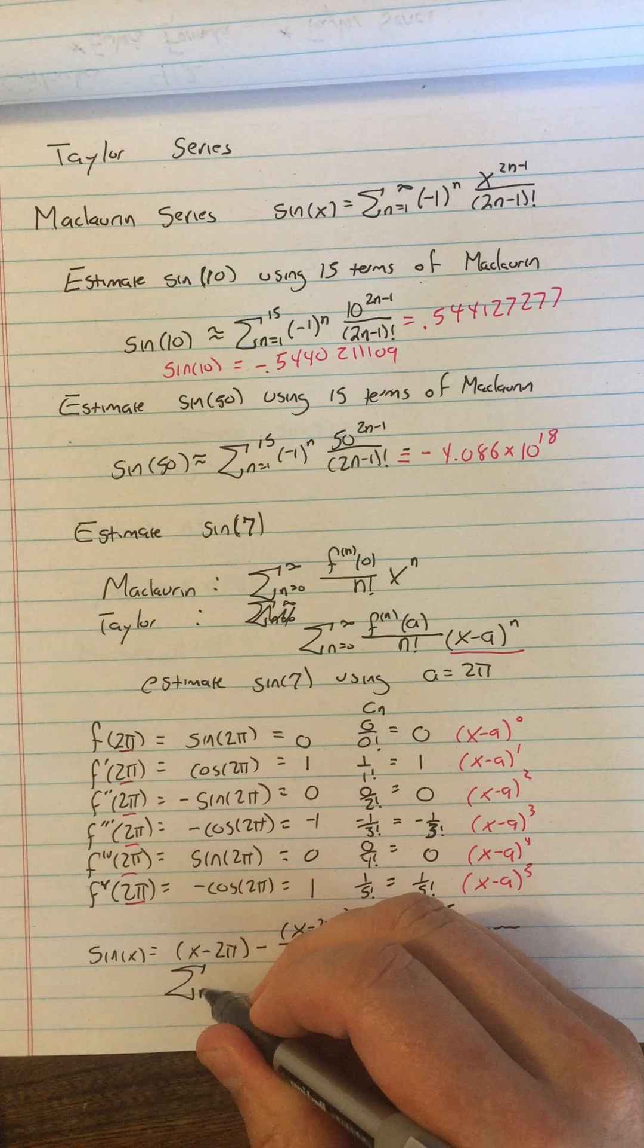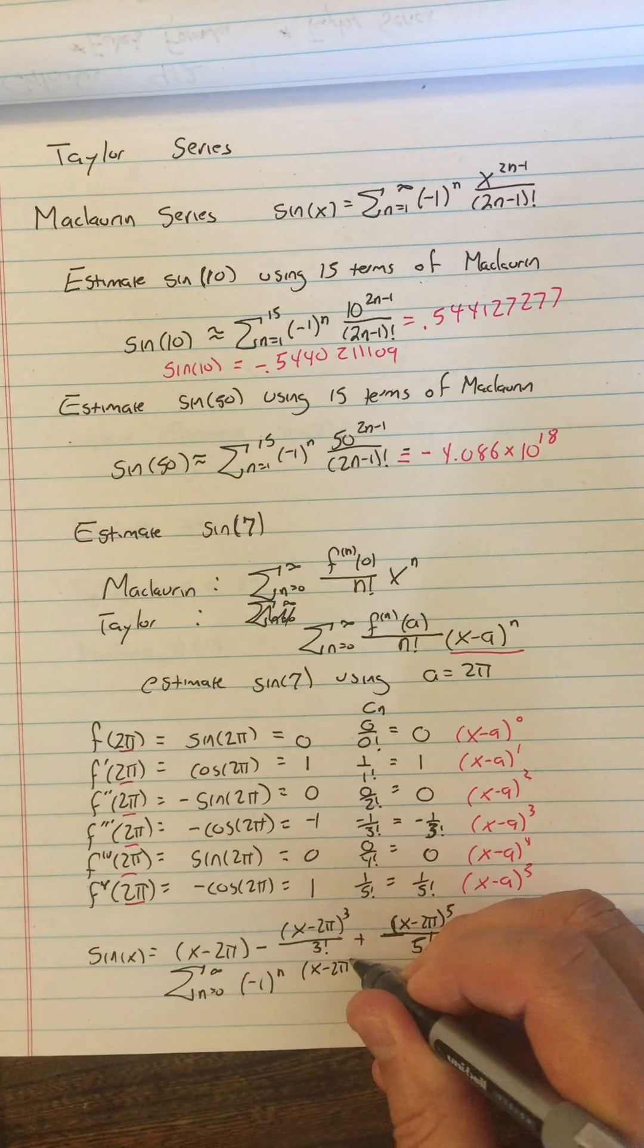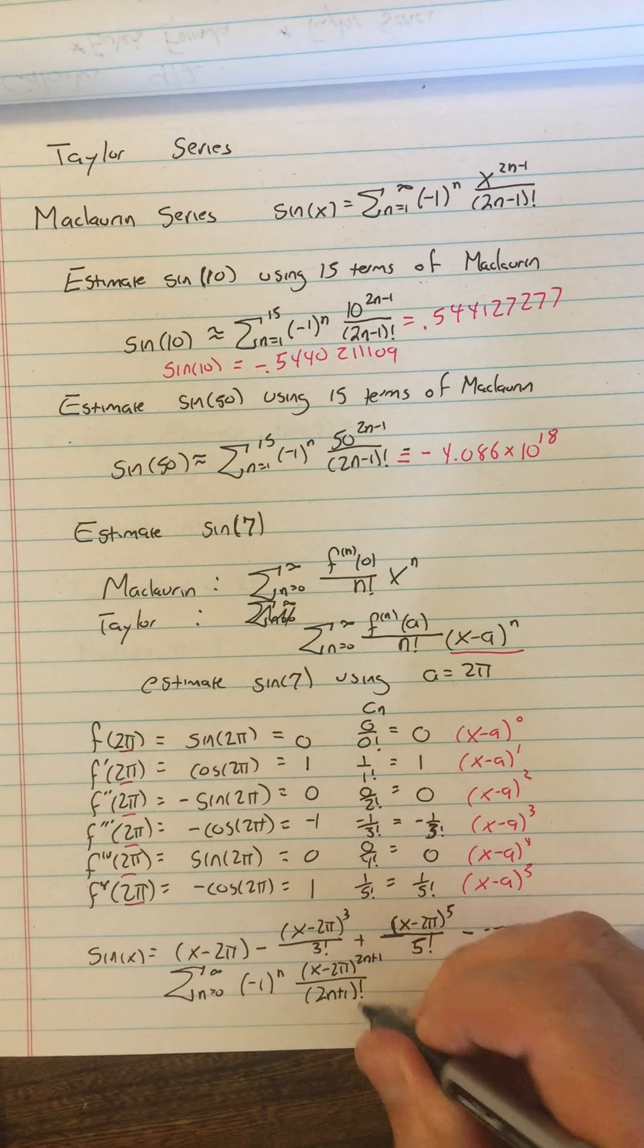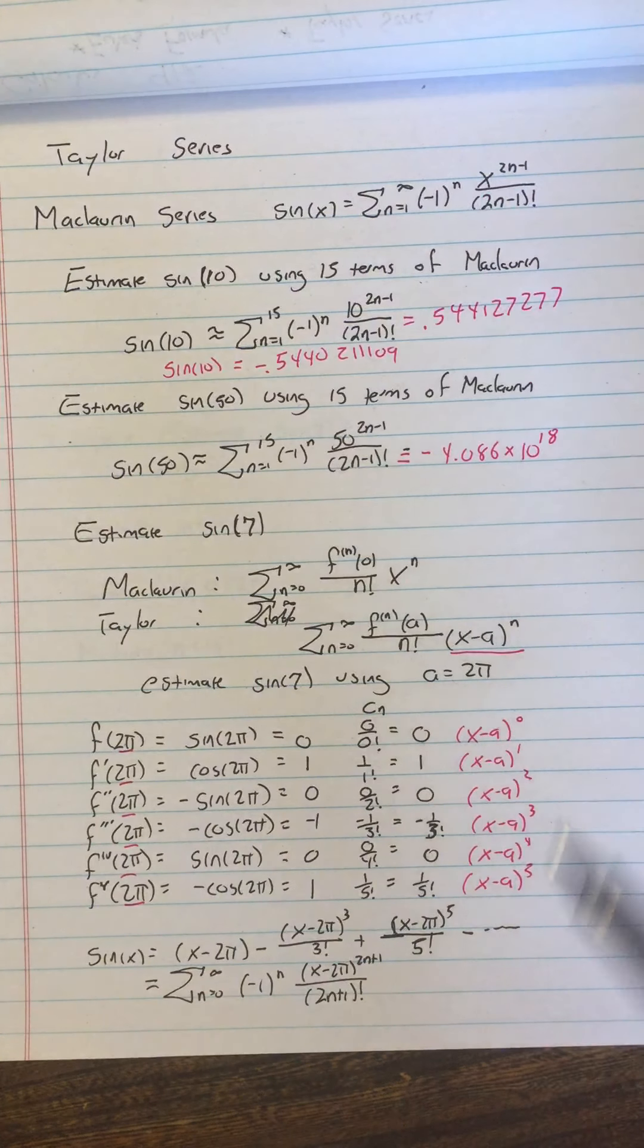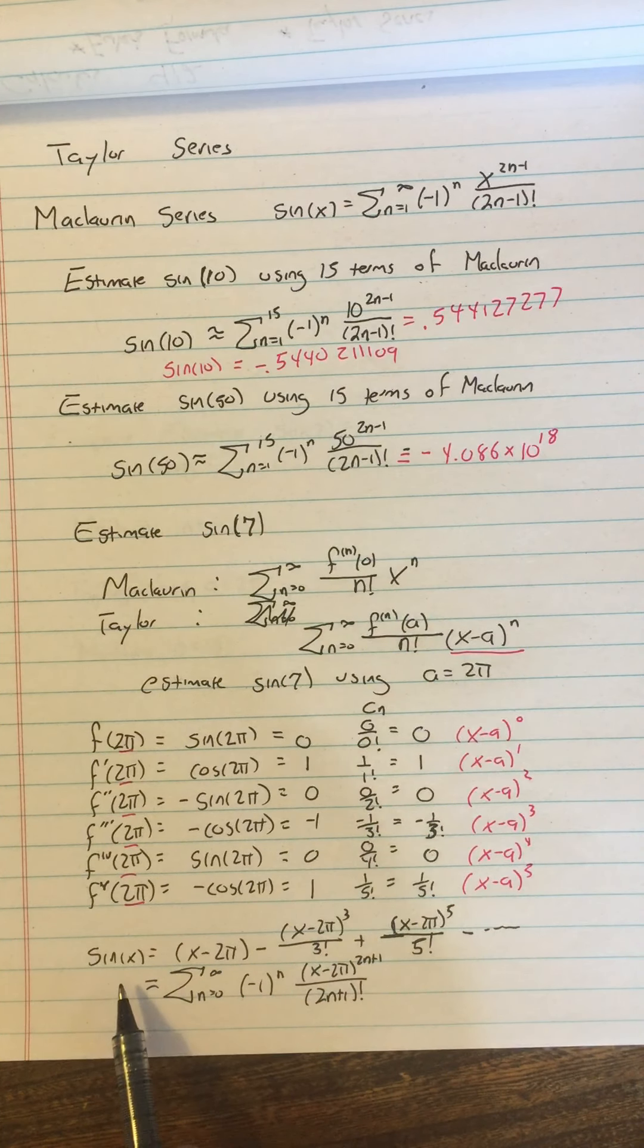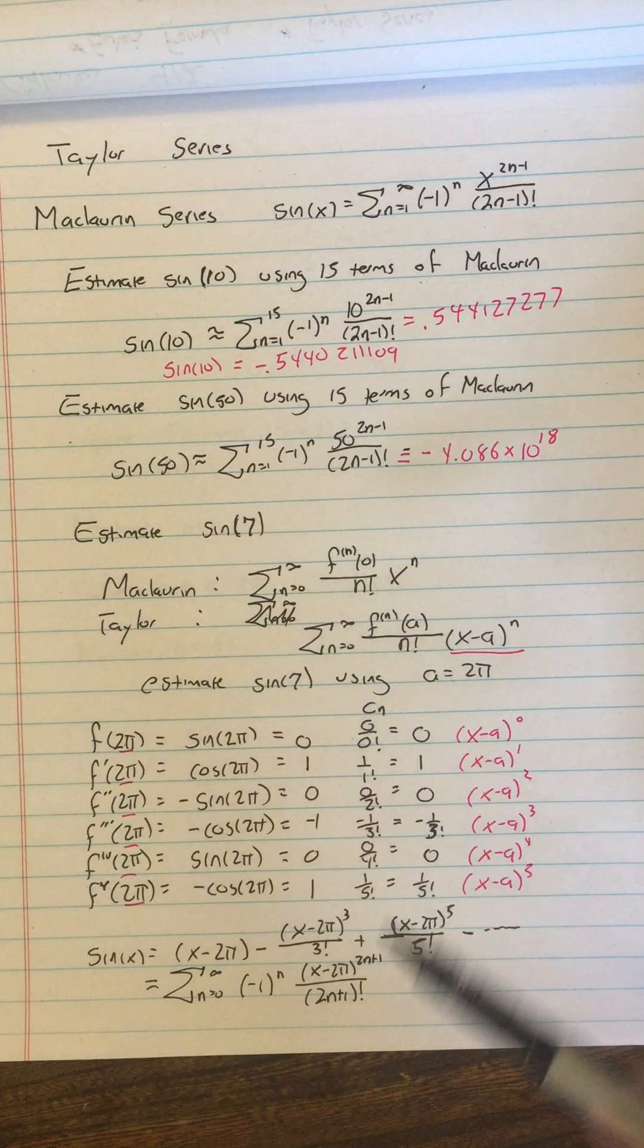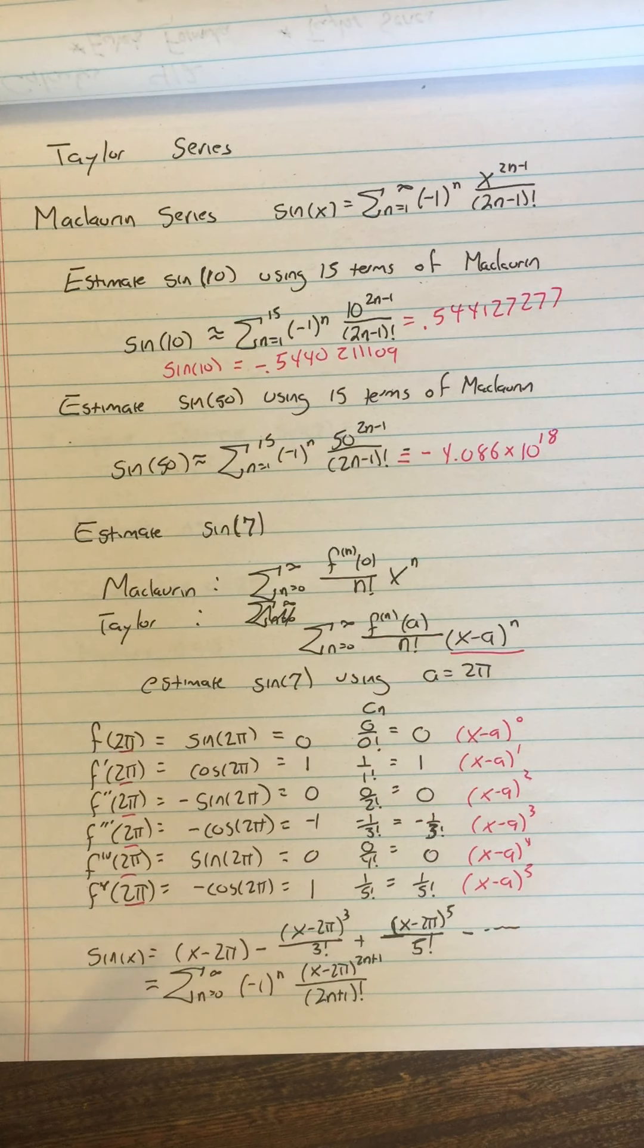So we can now say that sin of x equals x minus 2π minus x minus 2π cubed over 3 factorial plus x minus 2π to the 5th power over 5 factorial minus etc. So in fact, in general, this is sum from n equals 0 to infinity of negative 1 to the n of x minus 2π to the 2n plus 1 over 2n plus 1 factorial. Now, this expansion is also equal to sin x. Both the Maclaurin series and the Taylor series are equal to sin of x with infinitely many terms. But the Taylor series will converge more rapidly near 2π, so if I'm estimating a value like sin of 7 near 2π, I will need fewer finite terms in order to estimate that infinite term.